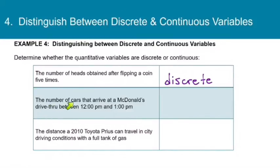Next up, the number of cars that arrive at a McDonald's drive-thru between 12 and 1. The number of cars is going to be a whole number. Either one car comes through or two cars or three cars, and it's not possible for us to have two and a half cars. So these numbers are hopping from one value to the next, and this is also discrete.